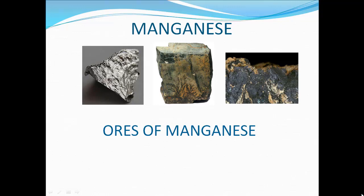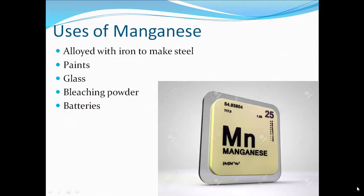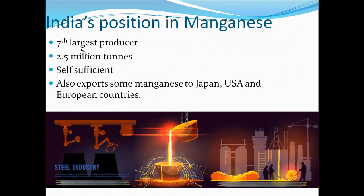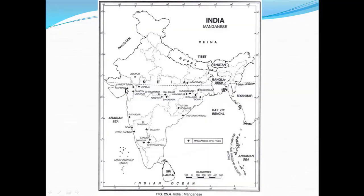The second important metallic mineral is manganese. Ores of manganese are pyrolusite and psilomelane. It is alloyed with iron to make steel, mixed with paint to increase lustre, and used in making glass, bleaching powder, and batteries. India is the 7th largest producer of manganese in the world, producing 2.5 million tons per annum. India is self-sufficient and also exports manganese to Japan, USA, and European countries. The largest producer is Orissa — Sundargarh and Keonjhar — followed by Karnataka's Bellary and Madhya Pradesh's Chhindwara and Balaghat districts.